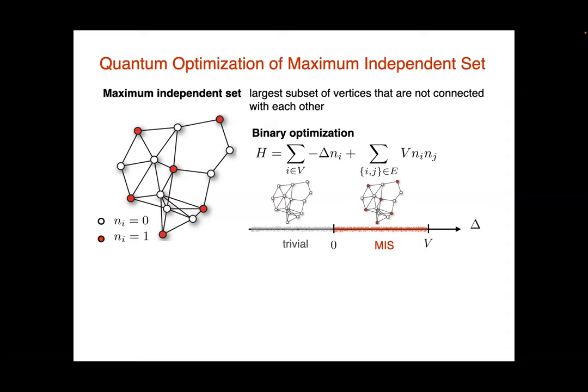I associate with each vertex a binary degree of freedom — zero or one — and write down this Hamiltonian, which has two phases. If delta is negative and V is positive, the ground state is the one where all vertices are in the zero state. But if you make delta positive, you can lower the energy by flipping vertices to one, but only as long as you don't place ones on neighboring vertices — the independence constraint — because you pay a price V. So as long as delta is smaller than V, the ground state maximizes the number of ones while satisfying all independence constraints. The ground state encodes the maximum independent set of the graph.